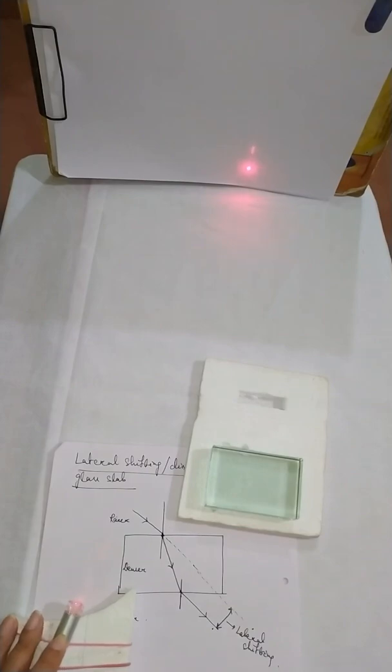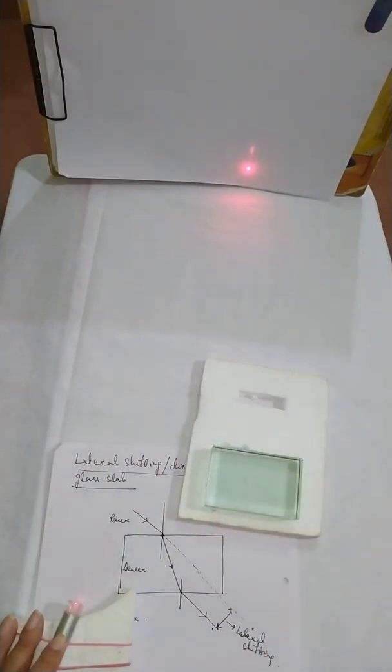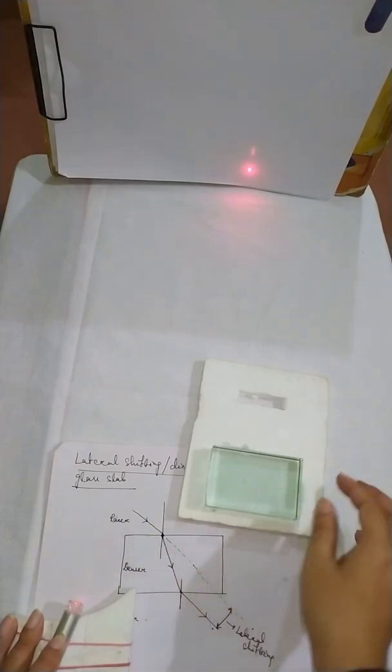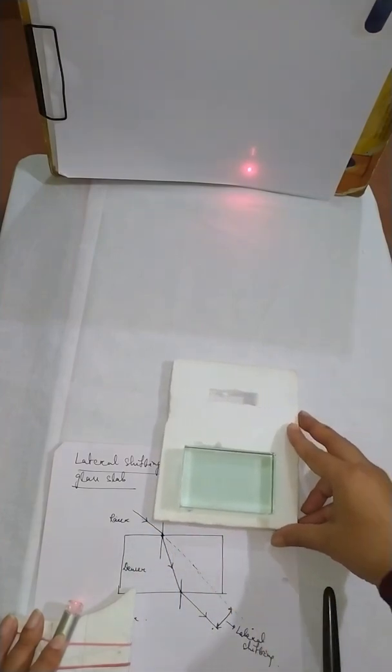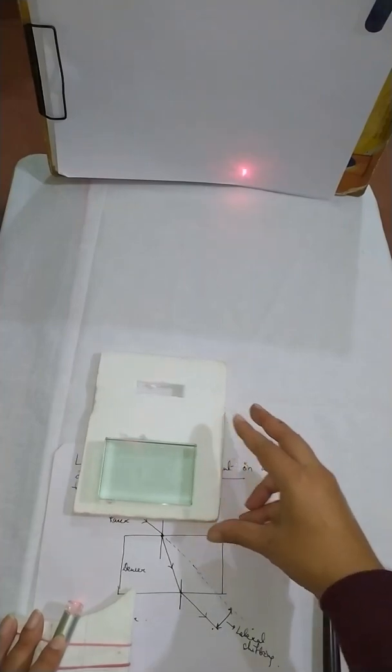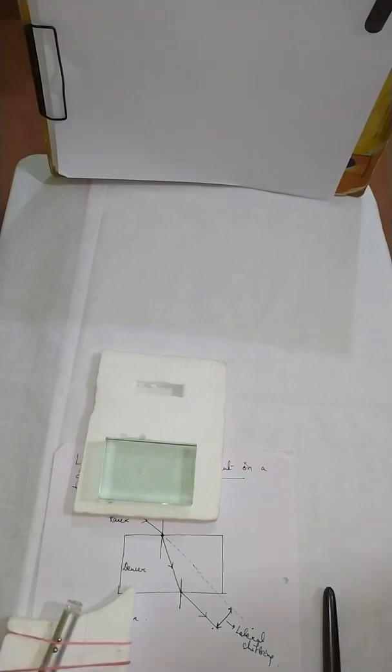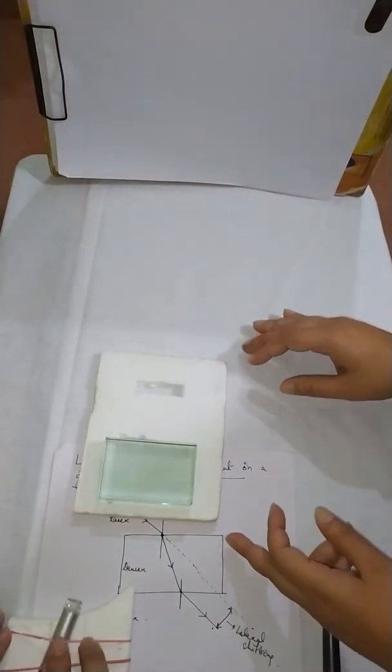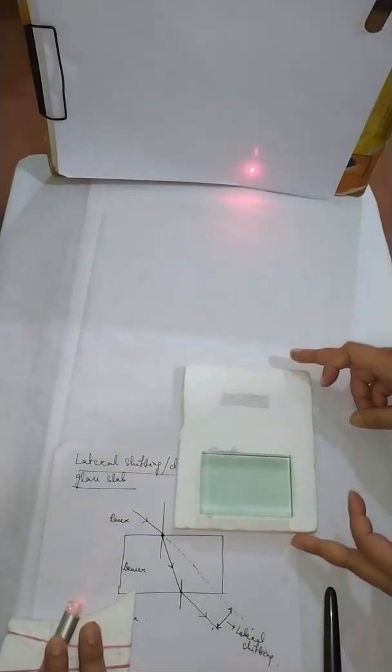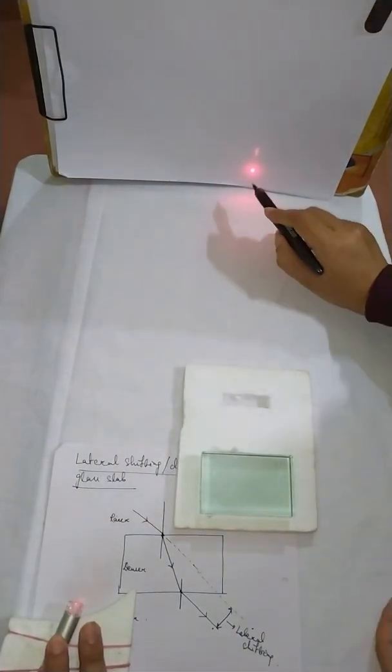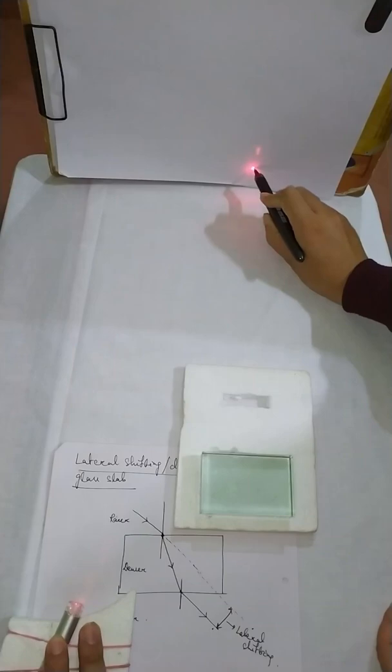You see, if the laser is switched on we can see the image on the screen at a particular point. Now I am just moving this one in front - you see the variation. I am doing it fast so that the variation can be seen easily. So this is the path of the beam.